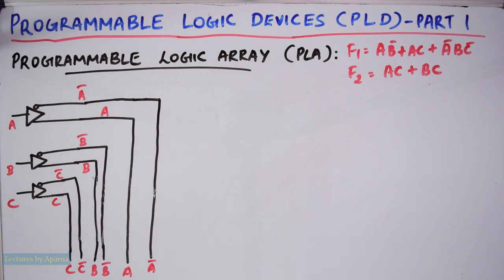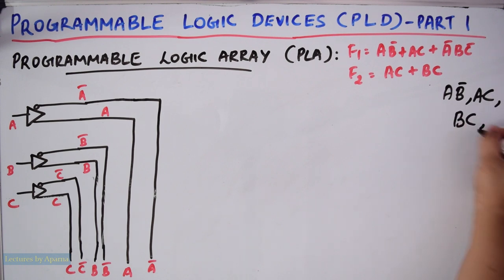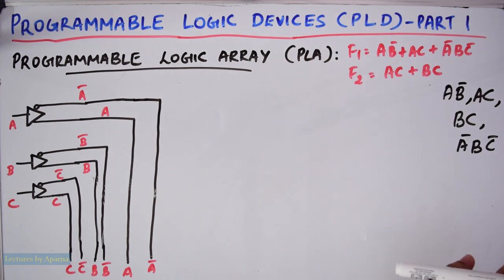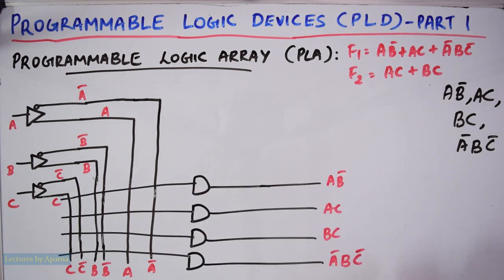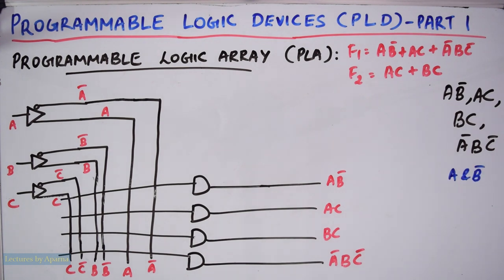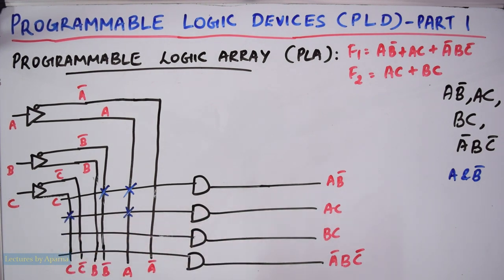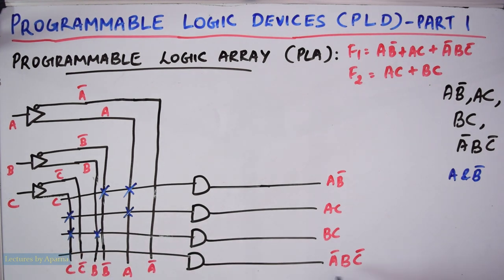Here total four product terms are there: AB̄, AC, BC, and ĀBC̄. So total four AND gates are needed. The product term is determined from the inputs whose cross points are marked by an into sign. To get AB̄, you have to cross at A and B̄. To get AC, you have to cross at A and C. To get BC, you have to cross at B and C. And to get ĀBC̄, you have to cross at Ā, B and C̄.